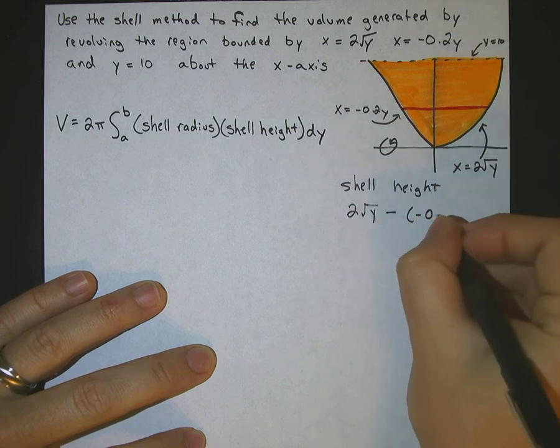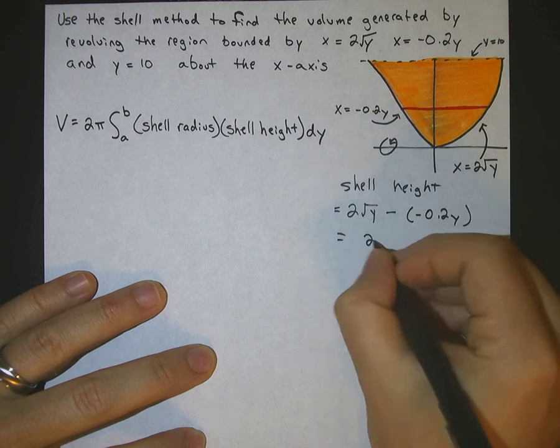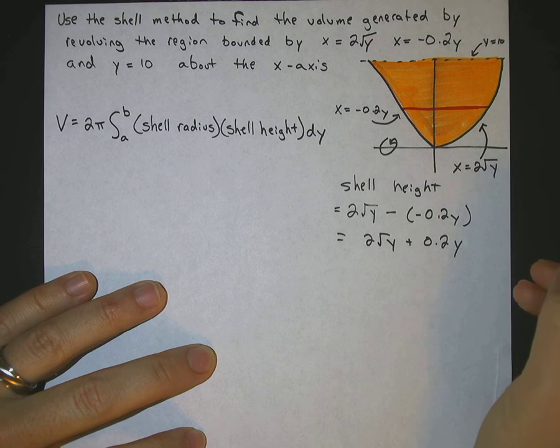So minus negative 0.2y. Okay, so that ends up being 2 square roots of y plus 0.2y. Okay, that is your shell height.